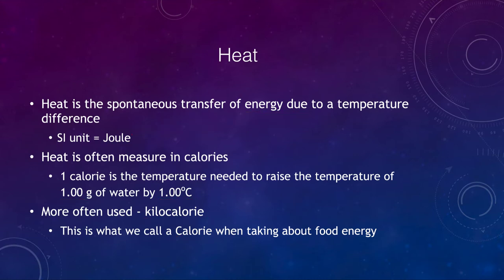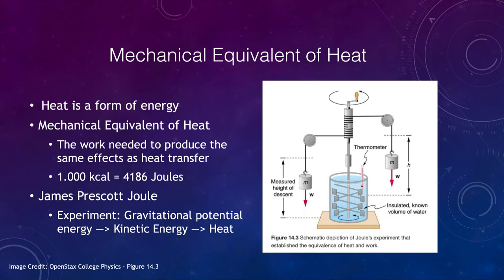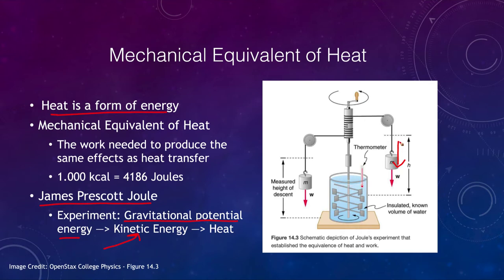How do we know that heat and energy are the same? This was demonstrated by an experiment by James Prescott Joule. He converted gravitational potential energy into kinetic energy — weights suspended and allowed to drop would fall, converting potential energy into kinetic energy, spinning a paddle that heated water measured by a thermometer. This was the first experiment showing that work and energy are the same thing as heat.